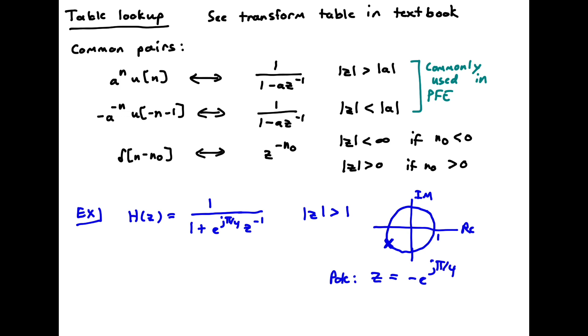And so this is set up in our standard form, where now a is equal to minus e to the j pi over 4. And then thus we can write h of n is simply going to be equal to minus e to the j pi over 4 raised to the n u of n. So that's just reading directly off this table expression here. So that's what we get for this simple inverse transform.